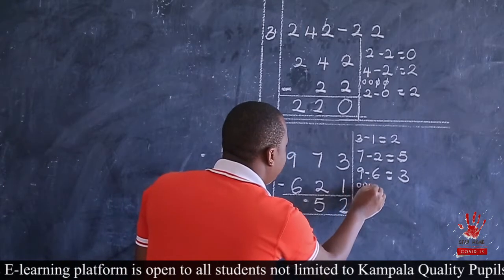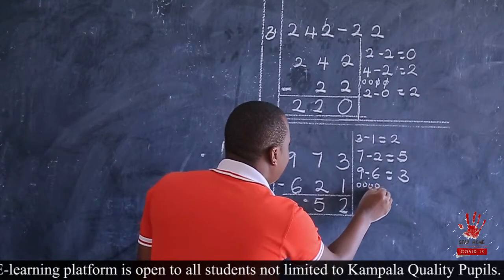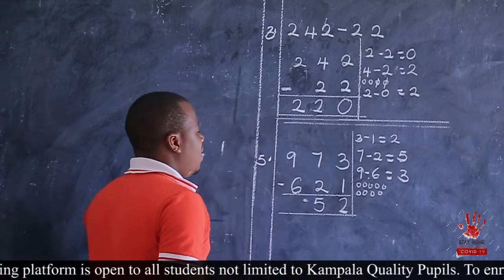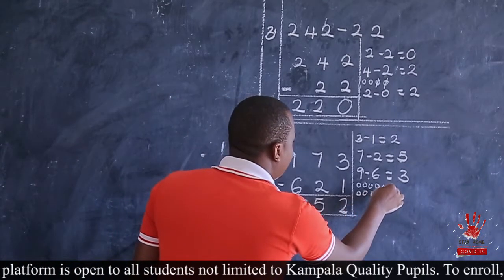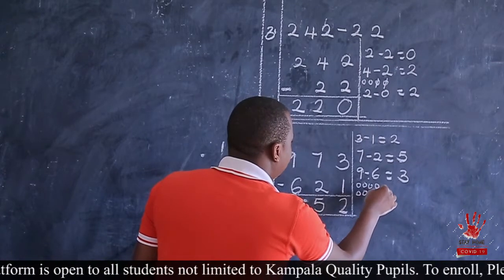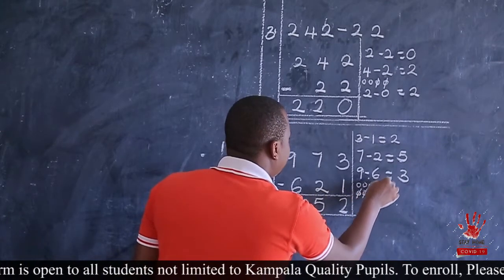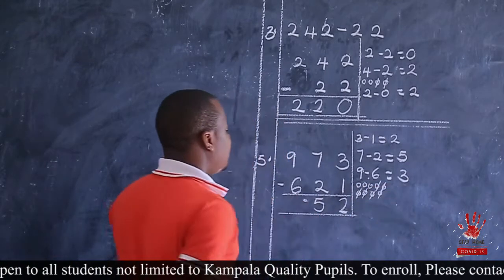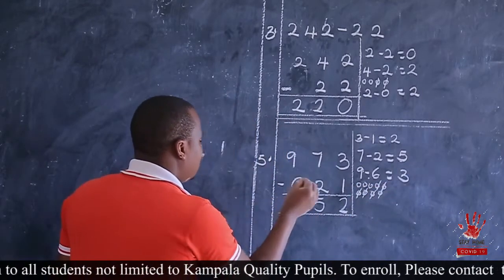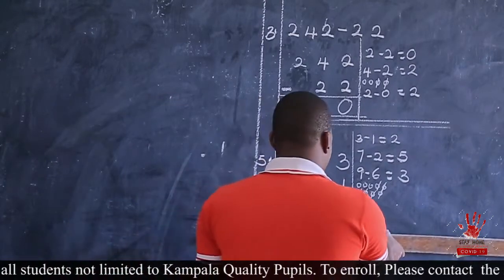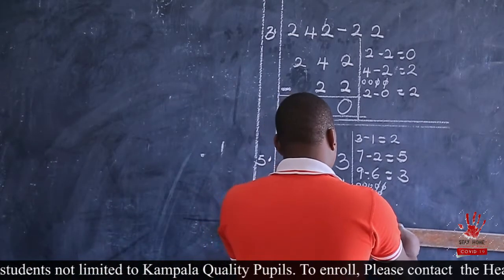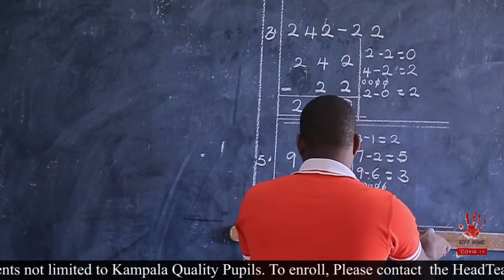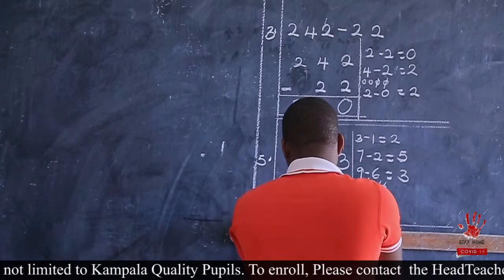I will draw nine: one, two, three, four, five, six, seven, eight, nine. Then I remove six: one, two, three, four, five, six. So what remains? One, two, three. My answer is three. Then after that, I will write it there and get your ruler and double-underline smartly.